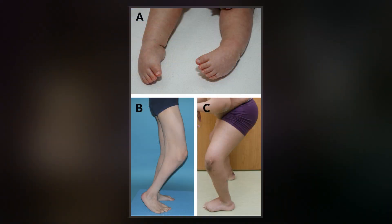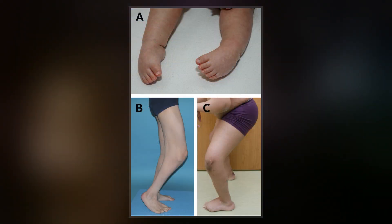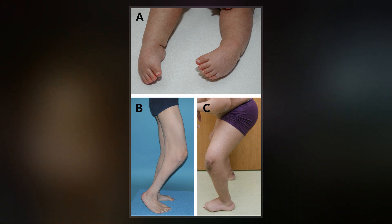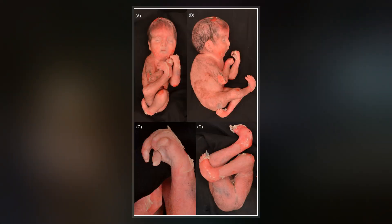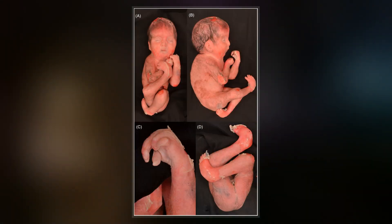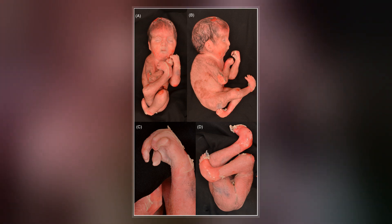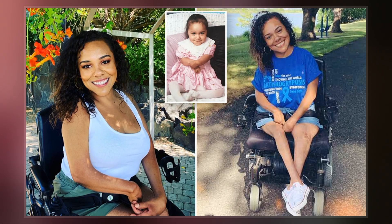AMC has been divided into three groups: amyplasia, distal arthrogryposis, and syndromic. Amyplasia is characterized by severe joint contractures and muscle weakness. Distal arthrogryposis mainly involves the hands and feet. Types of arthrogryposis with a primary neurological or muscle disease belong to the syndromic group.